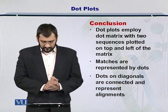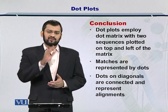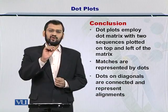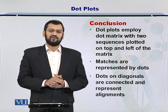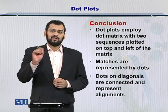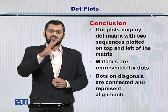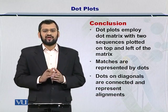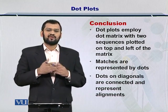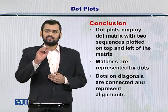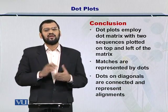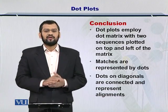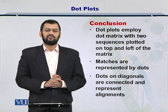In conclusion, dot plots employ a dot matrix with the two sequences you are trying to align in pairwise sequence alignment on top and on the left side. The portions of these two sequences — which may be nucleotides or amino acids — if they match, you place a dot in those positions. Then you try to connect these dots in the diagonal orientation. Matches that are adjacent represent the similar regions within the two sequences. If there are dots which have no connection with other dots, we treat them as noise. The dots on the diagonals are therefore the alignments you obtain from the process.